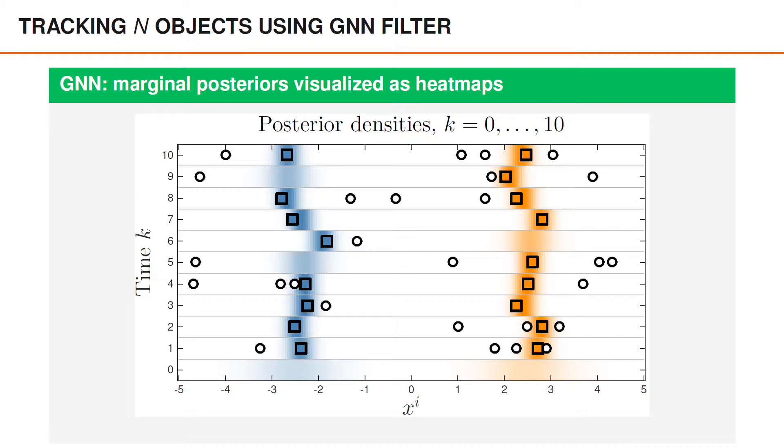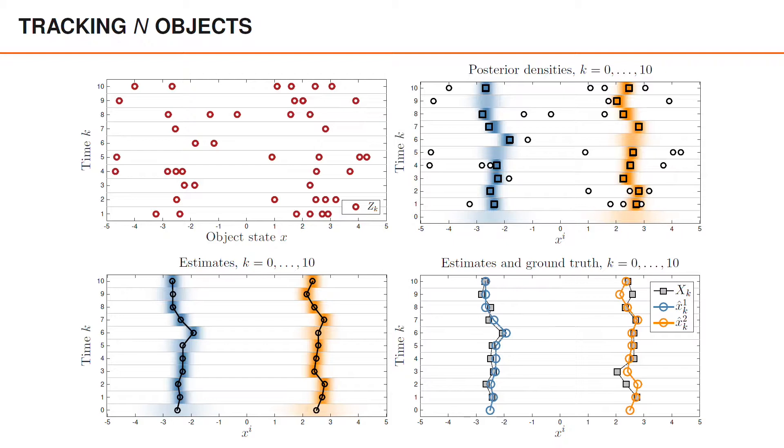We see that for both objects, in most time steps a detection has been associated, but there are also some time steps with no associated detection. Here, we've illustrated the measurements and the posterior densities together with estimates and ground truth. On top left, we have the measurements. On the top right is the posterior densities that we just had a look at.